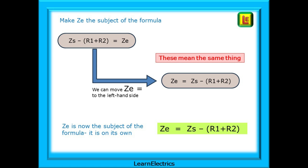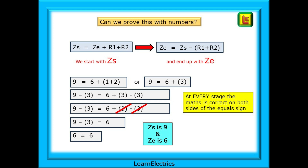We can tidy this up a little. It's common practice to put the subject — the number that we want to know — on the left-hand side. So we can move ZE equals over to the left to give us ZE equals ZS minus (R1 plus R2). Can we prove this with numbers? We started with ZS as the subject and ended up with ZE as the subject. Let's say ZS equals 9, ZE is 6, and R1 plus R2 is 1 plus 2. The equation balances: 9 on the left equals 6 plus 1 plus 2 on the right.